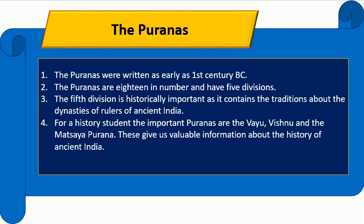The Puranas were written as early as 1st century BC. The Puranas are 18 in number and have 5 divisions. The 5th division is historically important as it contains traditions about the dynasties of rulers of ancient India. For a history student, the important Puranas are the Vayu, Vishnu, and the Matsya Puranas, which give us valuable information about the history of ancient India.